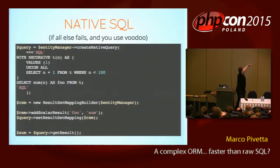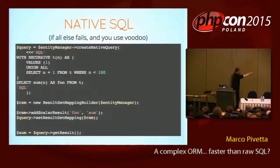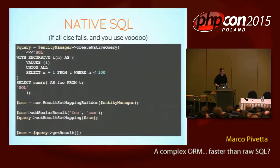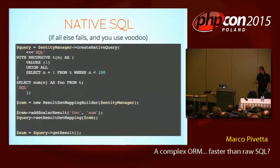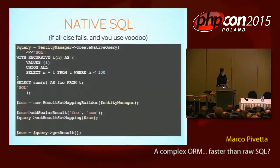You can go further down — this is a recursive query. I am building it with something called the native SQL component. We are going down, drops, drops, drops until we reach the bare metal — this is the SQL stuff. This works only on PostgreSQL. What this query is doing is computing the sum of all the numbers below 100. If you have some operation that has to be executed by the SQL engine at low level, you are going to use something like this.